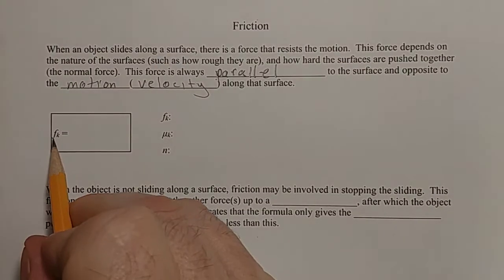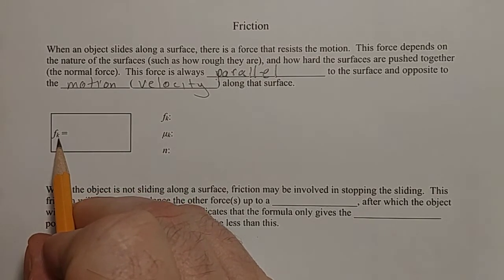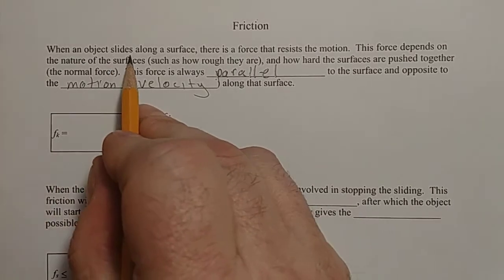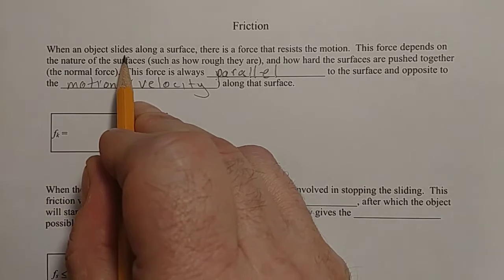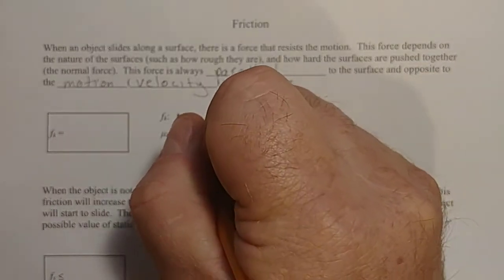So this force, which we use a lowercase letter f to represent, and we use the subscript K for kinetic. We're going to talk about kinetic friction first. And that is the friction that happens when an object slides. So kinetic means movement. When an object is sliding across the surface, it has this kinetic friction.